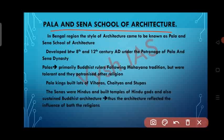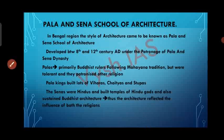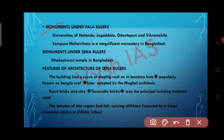In the Bengal region, the style of architecture is known as the Pala and Sena school, developed in the 8th to 12th century AD under the patronage of the Pala and Sena dynasties. The Palas were primarily Buddhists of the Mahayana tradition but were tolerant and patronized other religions too. The Pala kings built viharas (residential halls), Chaityas (prayer halls) and stupas. The Senas were Hindus and built temples to Hindu gods while also sustaining Buddhist architecture. Monuments under Pala rulers include University of Nalanda, Jagatdala, Odantapuri and Vikramshila. Sompura Mahavihara is a magnificent Pala monastery in Bangladesh, and Dhakeshwari Temple in Bangladesh is a monument under Sena rulers.